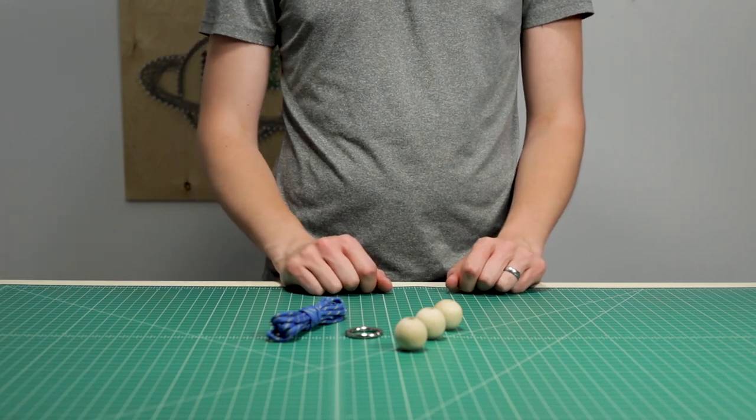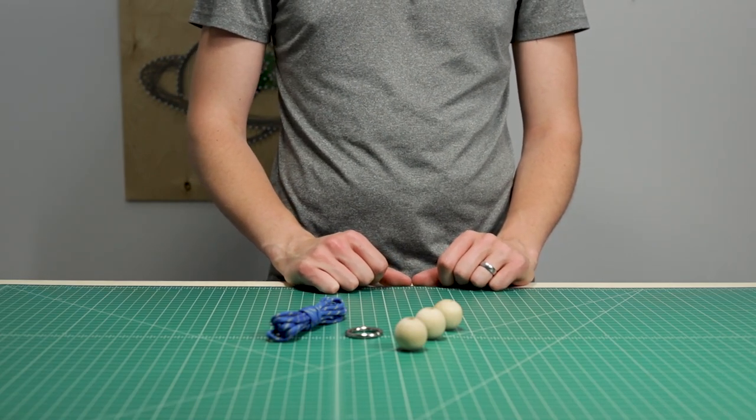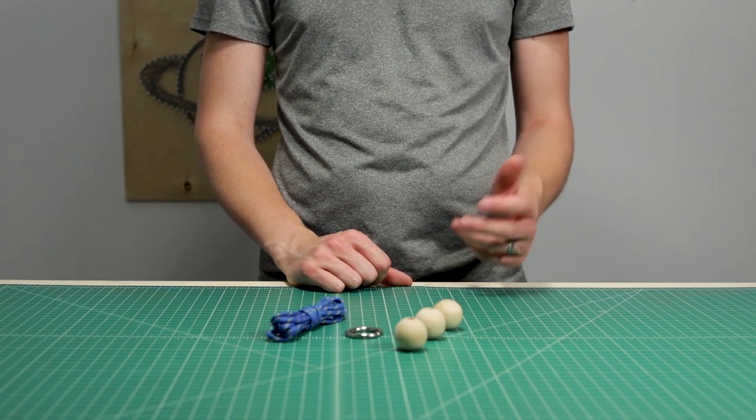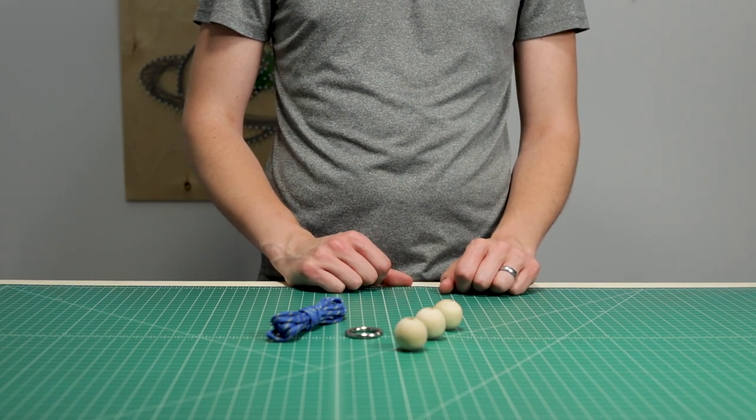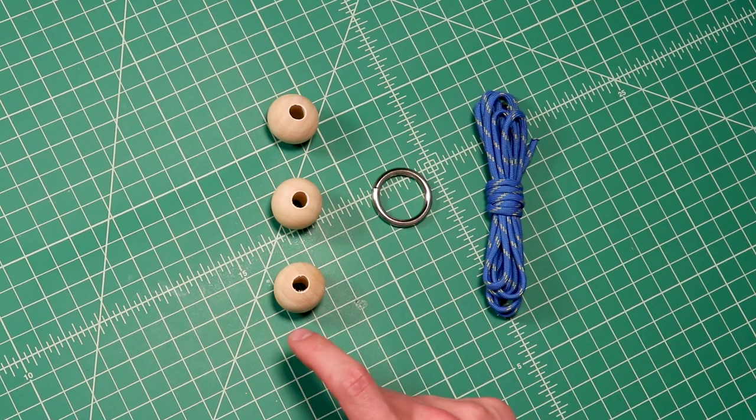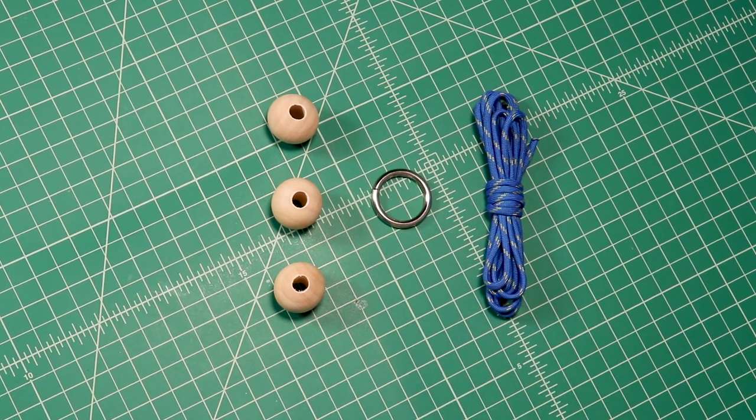Hi guys, welcome back to Paracord Planet. Today we're going to be making a brain teaser puzzle called the Bull's Nose. It was originally produced by Eureka Toys and Games, but we're going to be making our own here today. I've got some paracord, three wooden beads, and a metal ring. Let's dive right in.